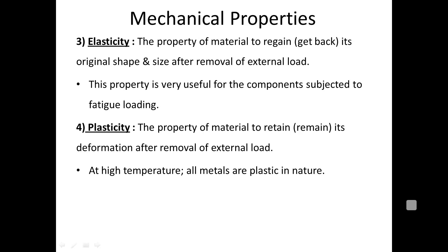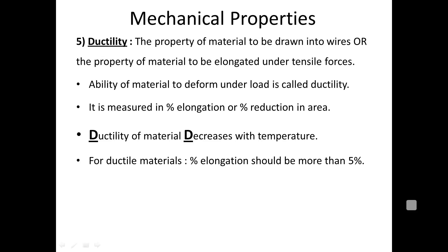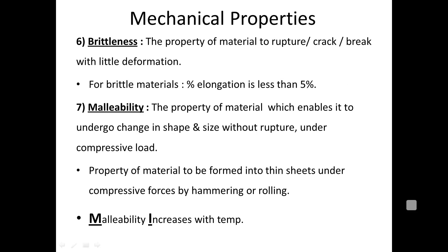Elasticity and plasticity are two opposite properties. In elasticity, the material regains its original dimensions when the load is removed. In plasticity, it retains a permanent deformation when the load is removed. Next, ductility — the property which allows material to be drawn into wires; hence it is useful in wire drawing. Ductility decreases with increasing temperature. It can be measured by percentage elongation. If percentage elongation is more than 5%, the material is ductile. The opposite property, brittleness, is the ability to rupture or crack. If percentage elongation is less than 5%, the material is brittle — for example, cast iron.